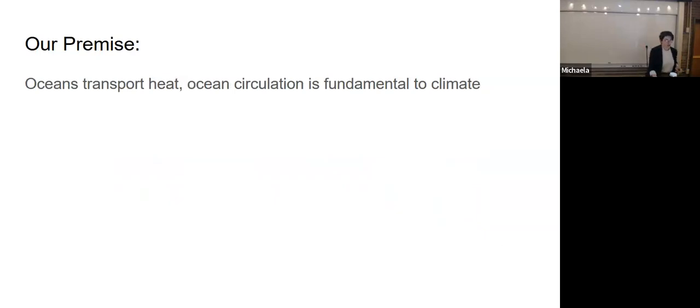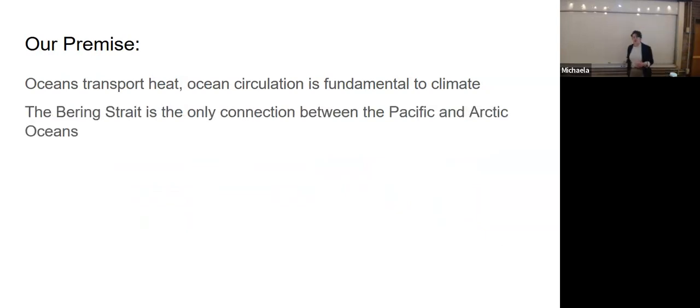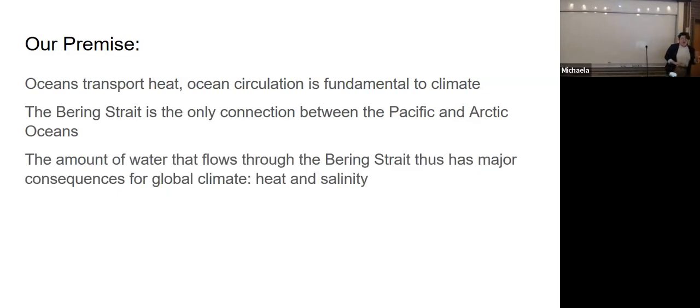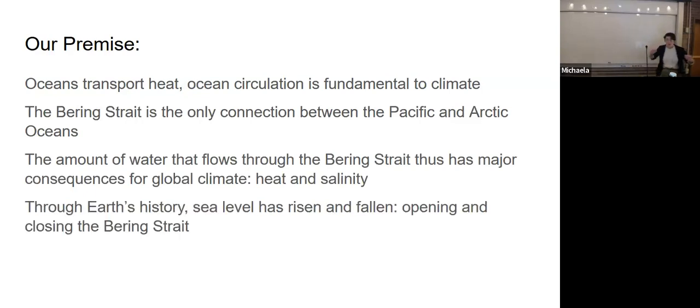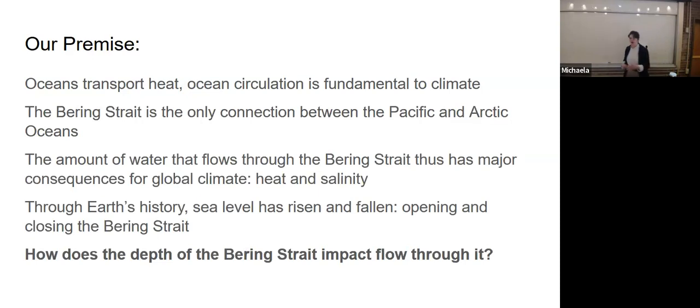Our premise for this project. The oceans transport heat. Ocean circulation is fundamental to climate for that reason. Heat is transported around the planet. If you change ocean circulation, you change how heat is transported, which must change climate. And we're talking about global climate. The Bering Strait is the only connection between the Pacific and the Arctic oceans. And for that reason, the amount of water that flows through the Bering Strait has really significant consequences for global climate.